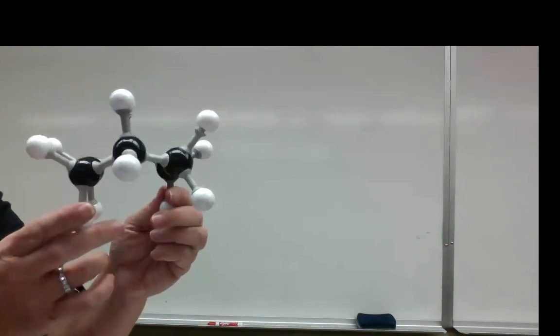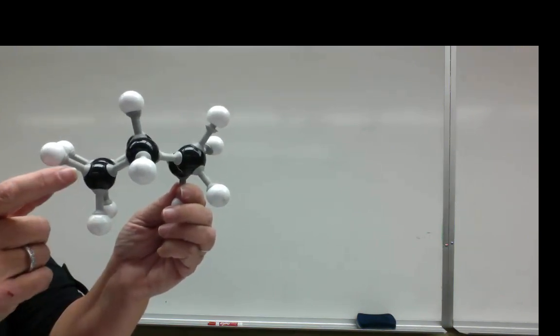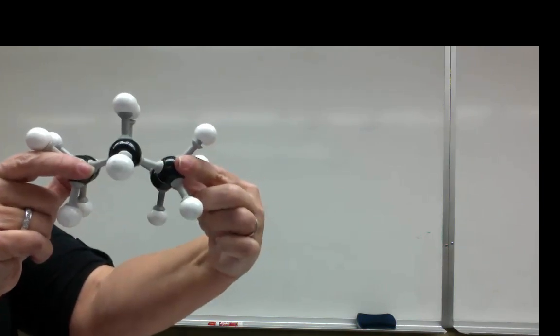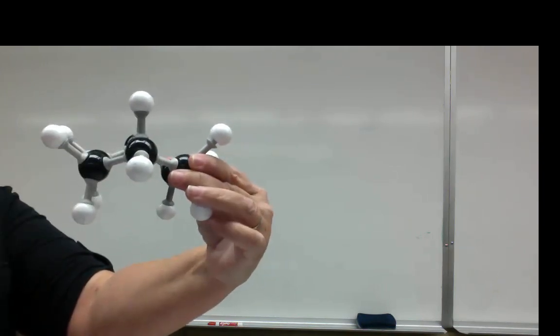This is the model of the boat, and when you're looking at it from the Newman projection, this is the viewpoint you want to look at it, where these two carbons are in front of each other, so these would be the two circles. And you can see that all the bonds are eclipsed.